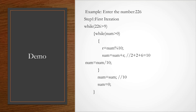Here is a demo. I have entered the number 226. In the first iteration, the logic checks that the number should be greater than 9, because it should be considered for double digits. If it is greater than 9, then inside the while loop we check if the number is greater than 0, and then we find the remainder and calculate the summation.